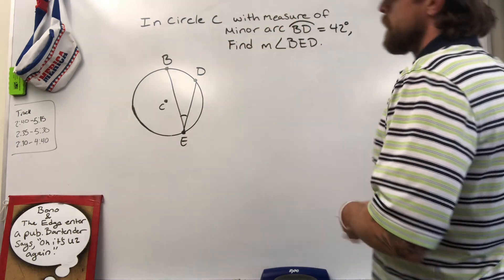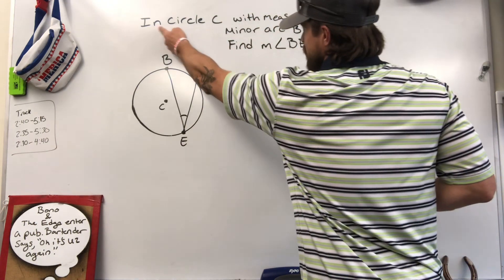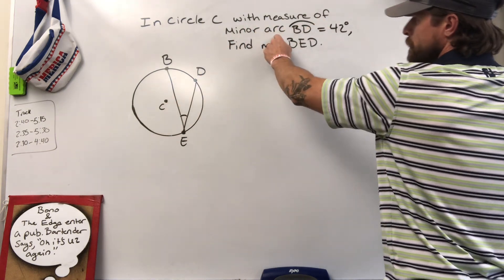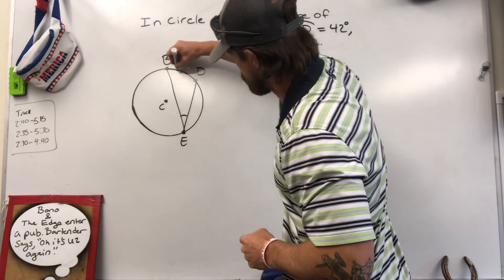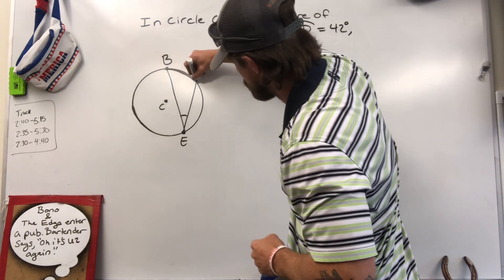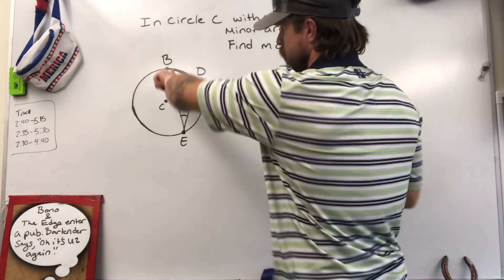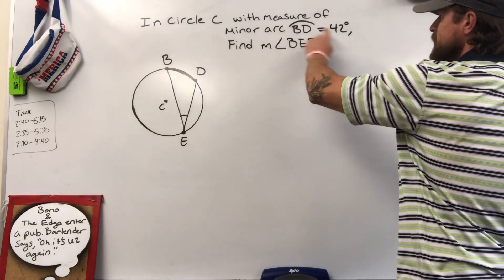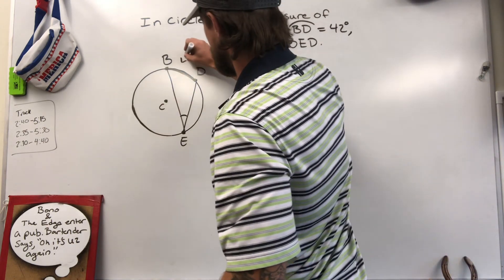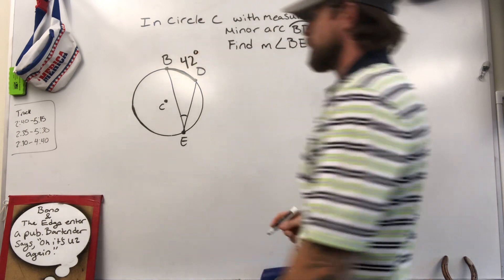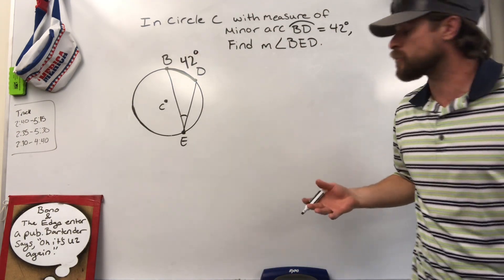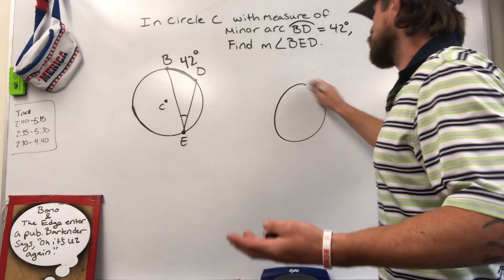If you look at this problem, they do give us some information in circle C with measure of minor arc. Minor arc would be the small arc BD. There's your minor arc. Major arc would be going the other way around. Okay, minor arc BD is 42 degrees. Oh, I'm so glad they gave us 42 degrees right there because now that we know that's 42 degrees, all we have to do is know the rules of geometry and the rules of geometry go like this.